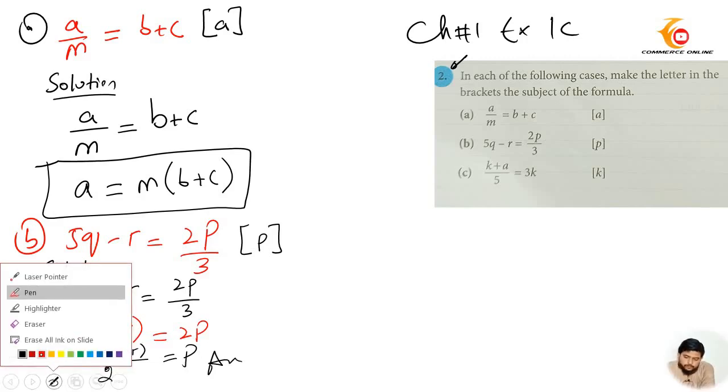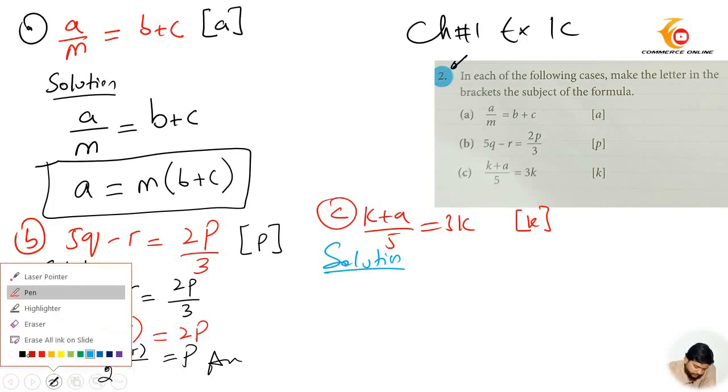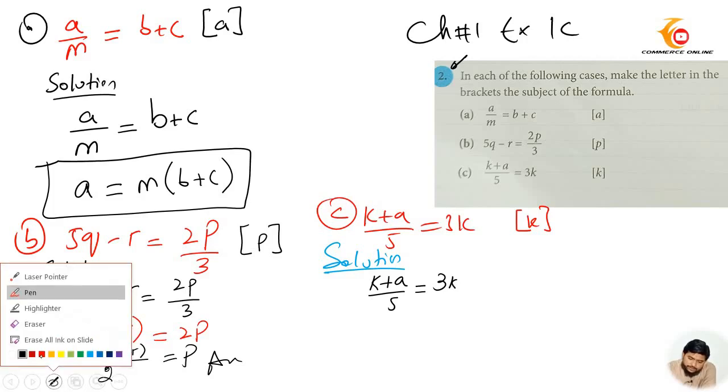Now let's move to question number C which is K plus A divided by 5 equals to 3K. First I will write solution, and then write the question jo sawaal hai. K plus A divided by 5 equals to 3K. The question which is written here, I will note down as it is.